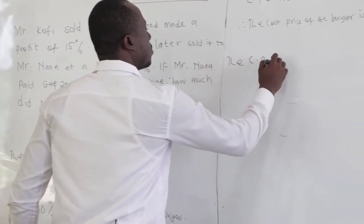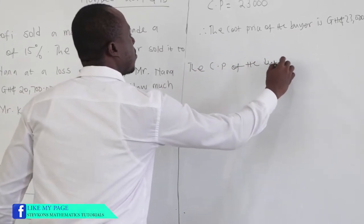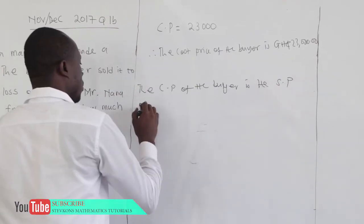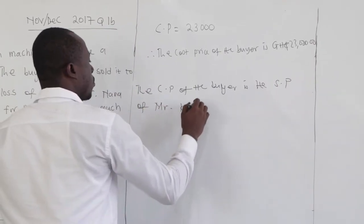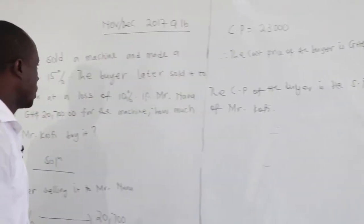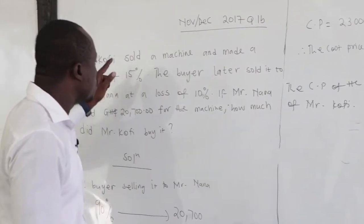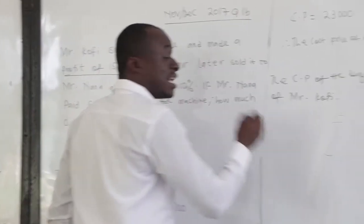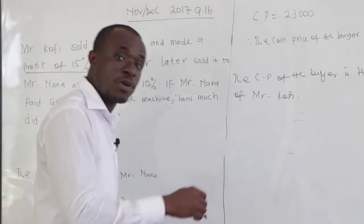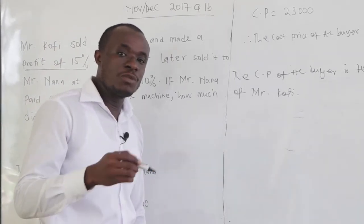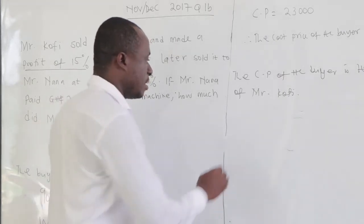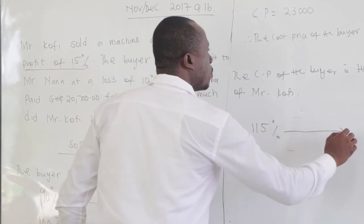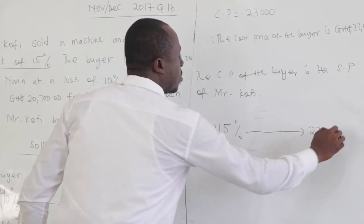The cost price of the buyer is the selling price of Mr. Coffee. We've been told that Mr. Coffee sold it at a profit of 15%. Because it is profit, we add the percentage profit to 100, so that would be 100 plus 15, which is 115%. This 115% corresponds to 23,000.